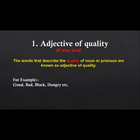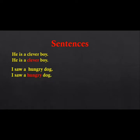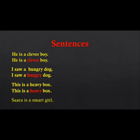Examples of adjective of quality include: good, bad, black, hungry, etc. In sentences: 'He is a clever boy' — clever is an adjective of quality. 'I saw a hungry dog' — hungry describes the quality of the dog. 'This is a heavy box' — heavy is an adjective of quality describing the box. 'Sarah is a smart girl' — smart is an adjective of quality.